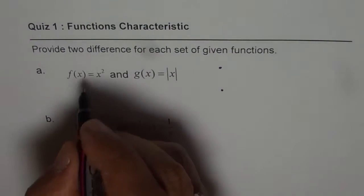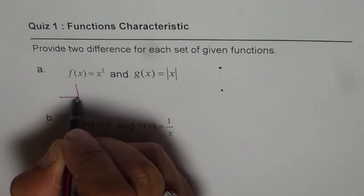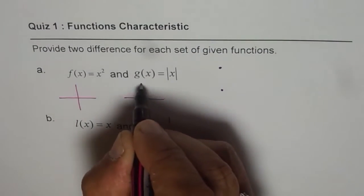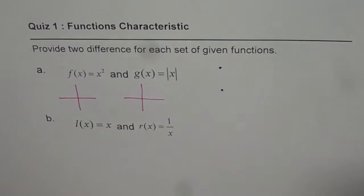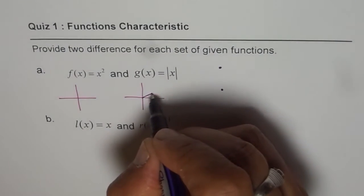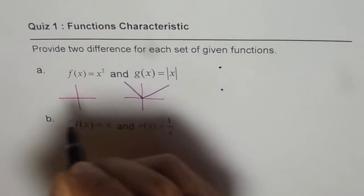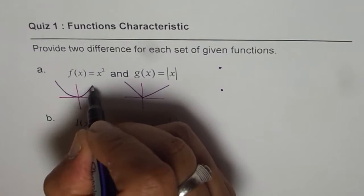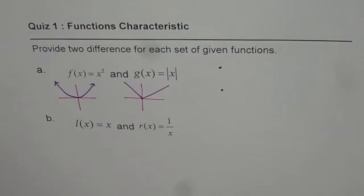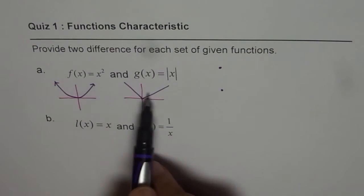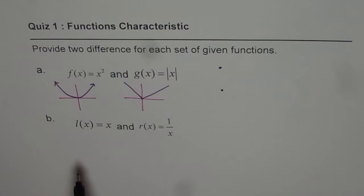As you know, f of x equals to x squared can be drawn. Let's draw both of them here and then figure out differences between them. This one and well approximately they look like this. So can you tell me two differences between these two functions?